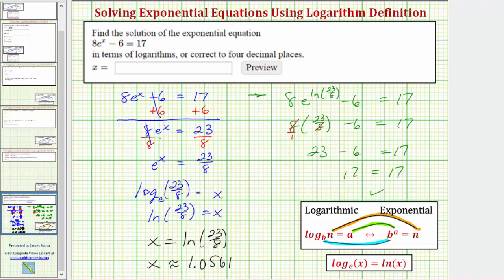So the exact solution is ln(23/8), or as a decimal approximation, we would have approximately 1.0561. And notice how the directions will take either the exact solution or the approximate solution to four decimal places. I hope you found this helpful.